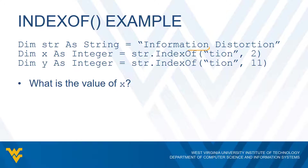Here is an example of how we would use the indexOf method. We have a string variable str that holds the string 'information distortion', and then we have two integer variables x and y that are both going to store results of calling the indexOf method. The first call is going to look for 'tion' starting at index two, and the second call is also going to look for 'tion' starting at index eleven. Both calls could give us the same value or different values depending on whether 'tion' is in the string.